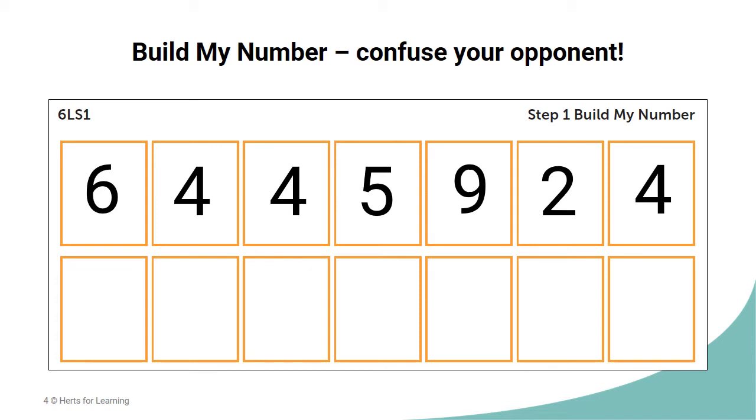Now Player A should try to confuse their opponent by changing digits within the number. As they describe how the digits are changing,